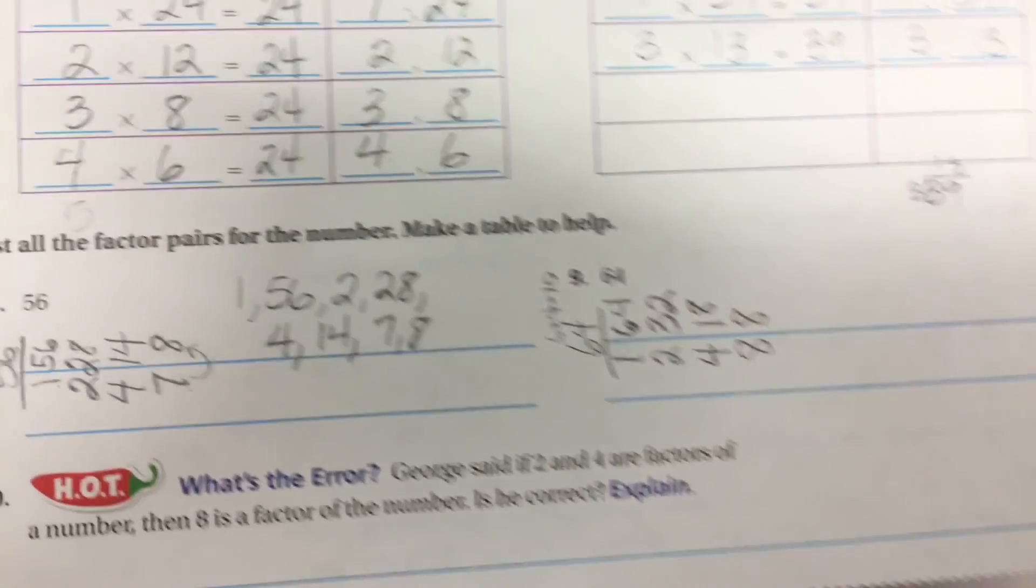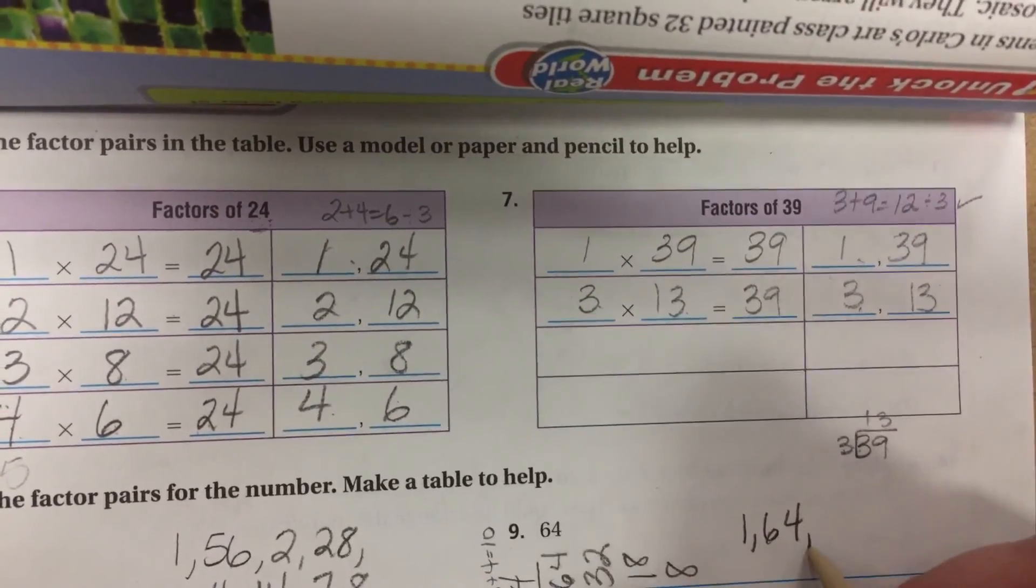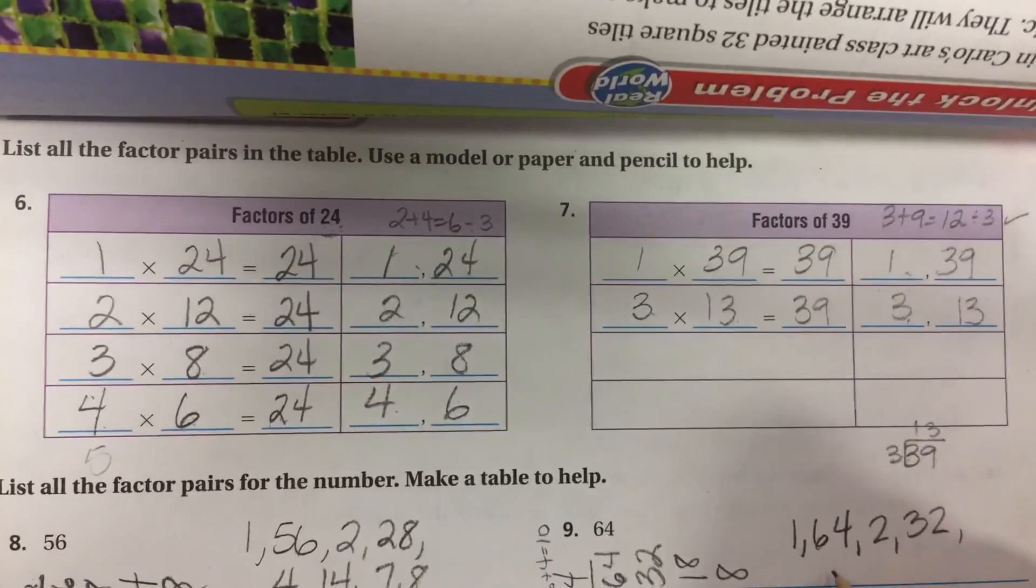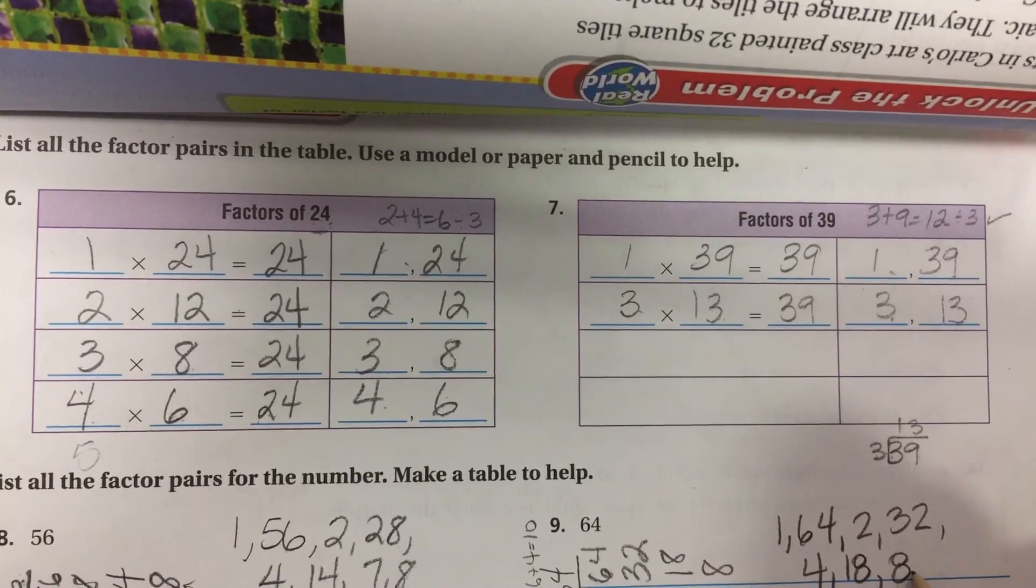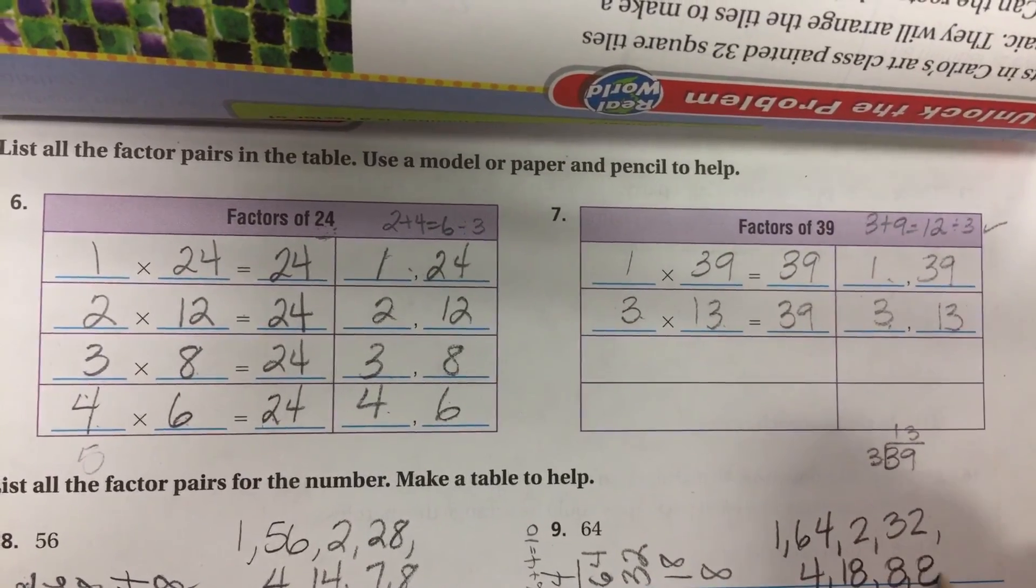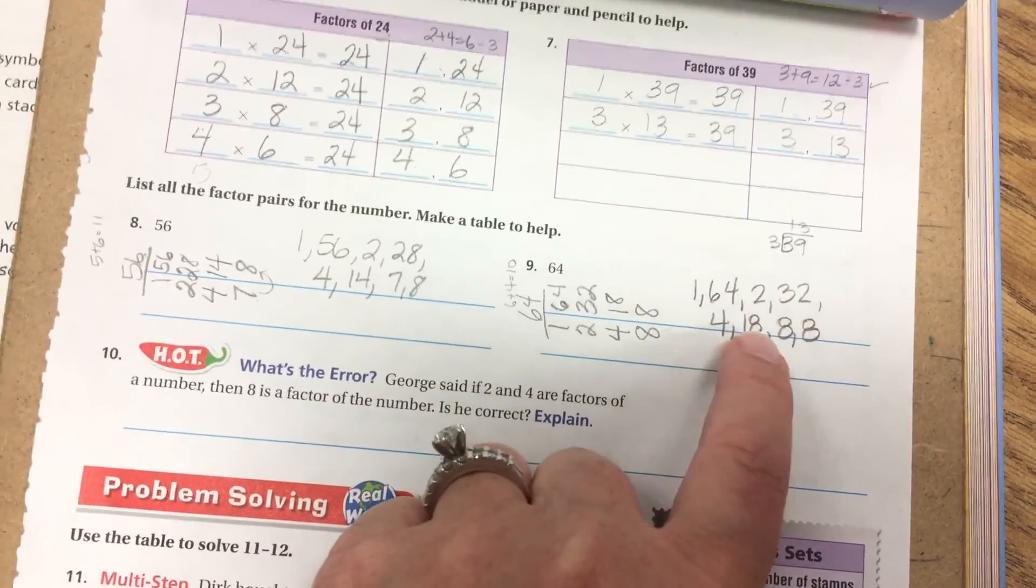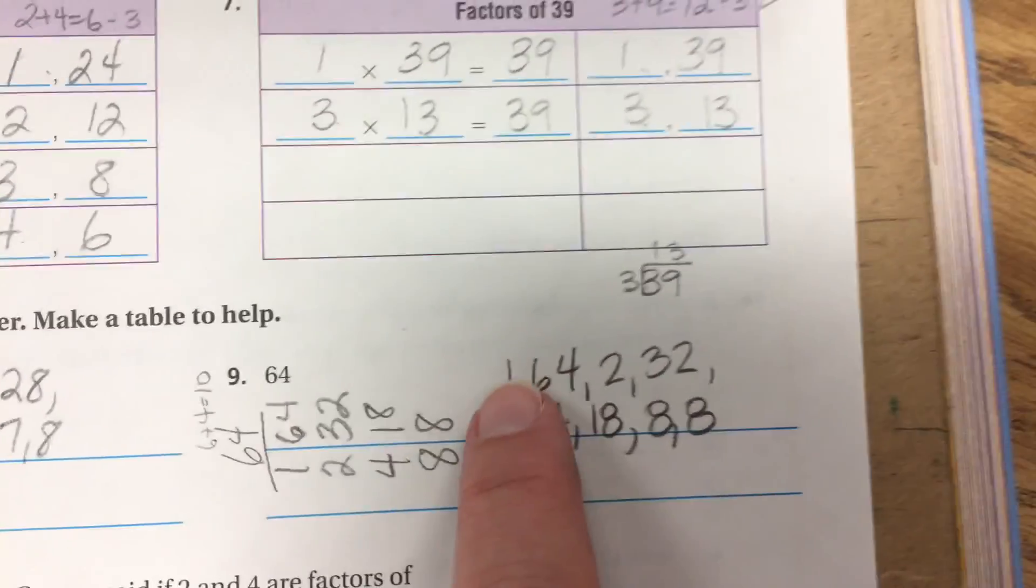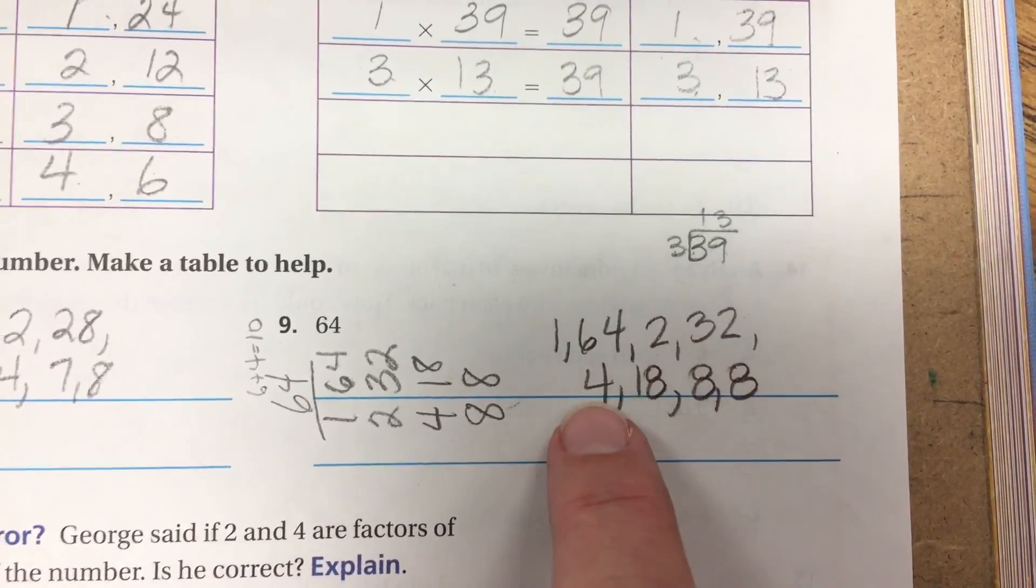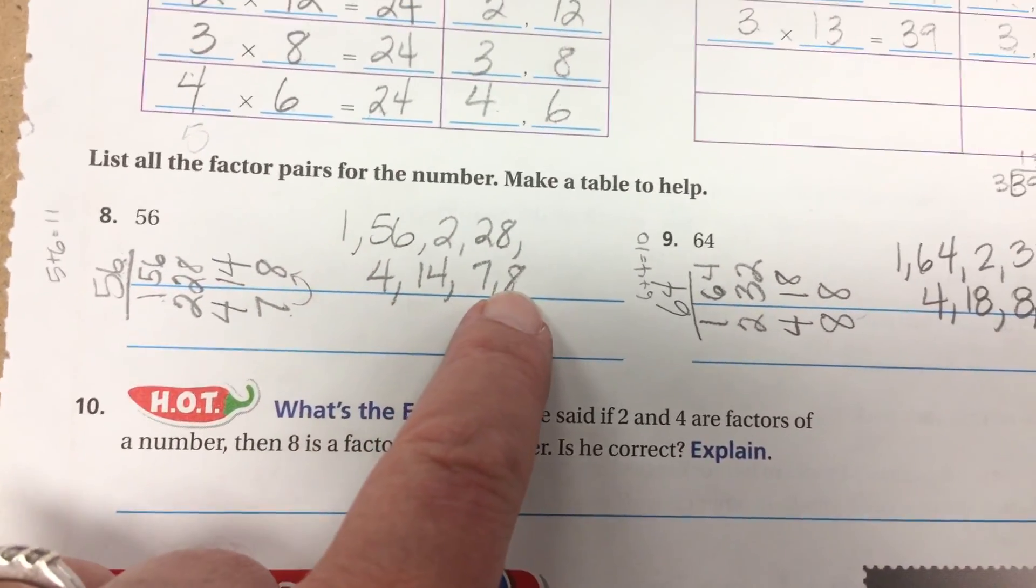So now, listing my factor pairs. 1, 64. 2, 32. 4, 18. 8 and 8. So I've got 1, 2, 3, 4, 5, 6. Can I count this 7 and 8? Can I count these as two different numbers? The answer is no. So there's 1, 2, 3, 4, 5, 6, 7 factors. Here there's 1, 2, 3, 4, 5, 6, 7, 8 factors.